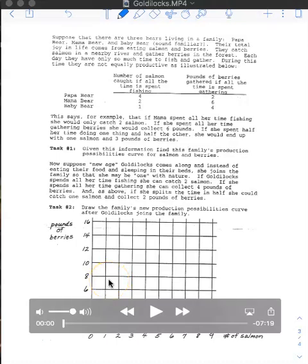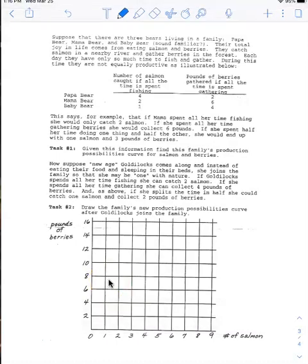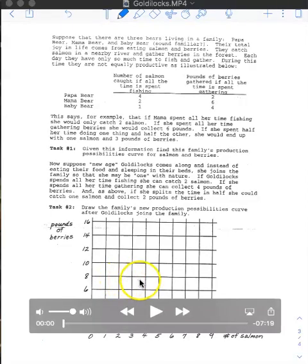So we just got done looking at a production possibilities curve with coal versus wildlife, and that was with a set amount of resources, set amount of land, set amount of coal deposits. We're going to look at a different scenario with the bear family, and eventually we're going to add a labor resource. We're going to add Goldilocks, and so you're going to see how the curve can move when we add more resources.